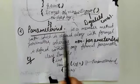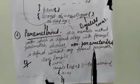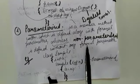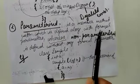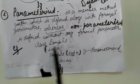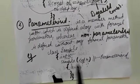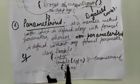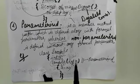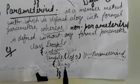The second type is the parametrized constructor. It is a member method defined along with formal parameters, whereas a non-parametrized constructor is defined without any formal parameters. In the parametrized example, I have taken class name 'sample' with integer variable a. The constructor 'sample(int n)' has the same name as the class, so it is a constructor — parametrized with int n. Whatever value the user gives, a equals n.